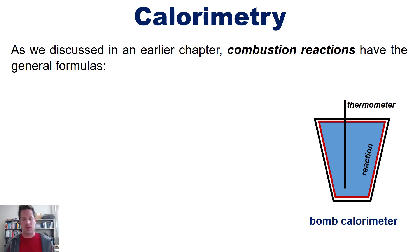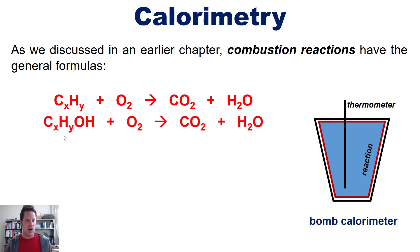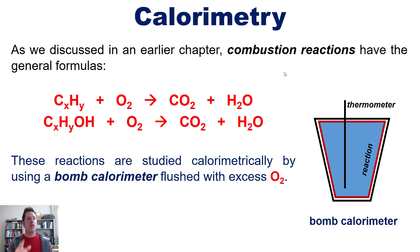Now as we discussed in an earlier chapter, again linked to in the description below and floating over my head here I think, combustion reactions have the general formulas shown here, where you take a hydrocarbon, react it with O2 oxygen gas, to form the exact same products every time, CO2 and H2O. Also you can take an alcohol, which has this general formula, and react the same. Produces the exact same products. These are combustion reactions. With that in mind, these reactions are often studied calorimetrically, that is in a bomb calorimeter, flushed with excess oxygen, in order to measure the amount of heat they produce.